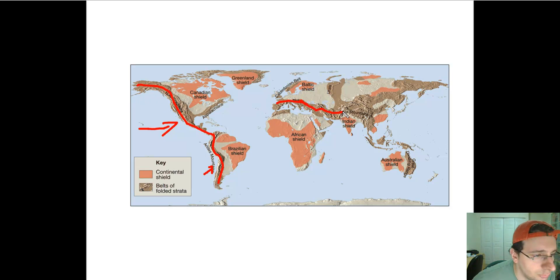This mountain belt, which includes the Alps, the Himalaya Mountains, are all forming because of the collision between Asia and the African and Indian plates. Then you have the Ural Mountains, which formed a long time ago when Asia collided with Europe.